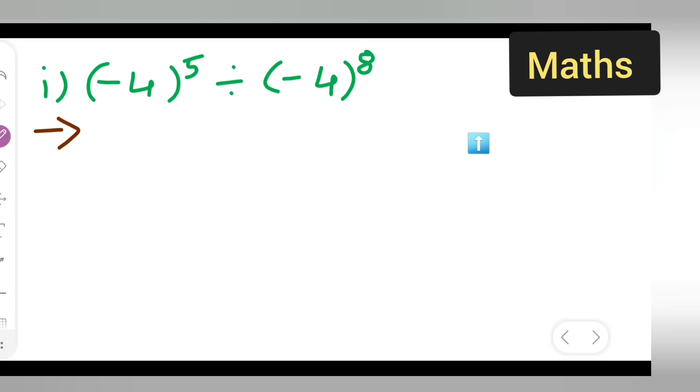First, write down this as that is minus 4 raised to power of 5 divided by minus 4 raised to power of 8.